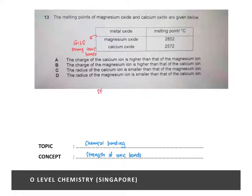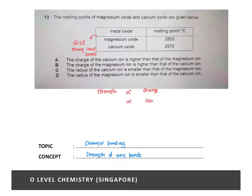The strength of an ionic bond depends on the charge — the higher the charge on the ions, the stronger the ionic bond. The strength of ionic bonds is also inversely proportional to the ionic radius, meaning the larger the size of the ion, the weaker the strength of the ionic bond.